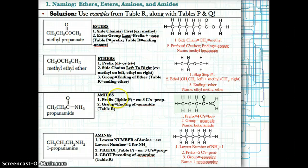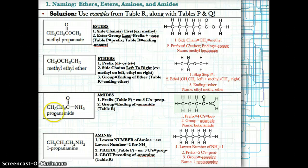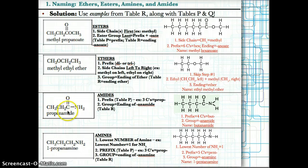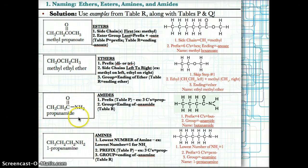Next, we have amides. Amides are very simple: use a prefix based on the number of carbons from table P, then add the group ending -anamide. Here we have three carbons — one, two, three — so the prefix is prop. Based on table R, since we have C double bond to O and an NH2, the ending is -anamide. Putting it together: three carbons gives prop, plus -anamide for the functional group, giving propanamide.